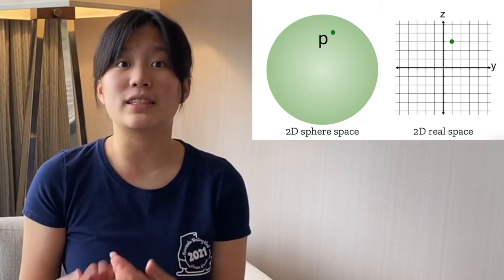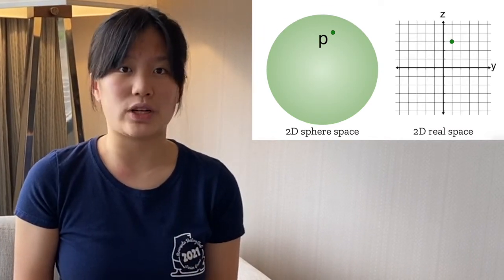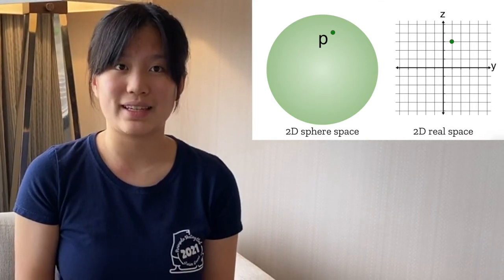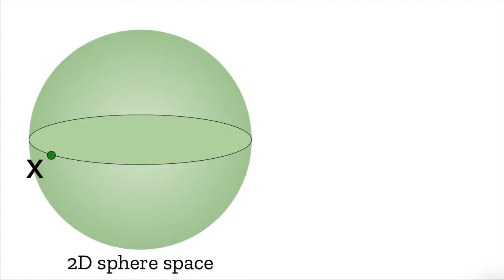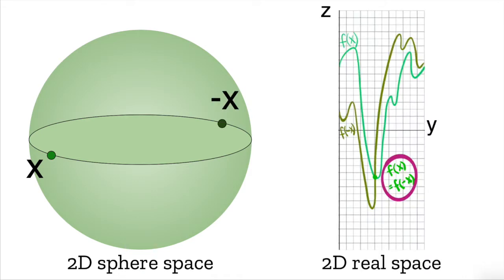According to the n equals 2 case of this theorem, for every continuous function F that takes in a point located on the 2D sphere space and outputs an associated Y-Z coordinate on the 2D real space, there exists a point X on the 2D sphere space such that F(X) is equal to F of negative X. For instance,